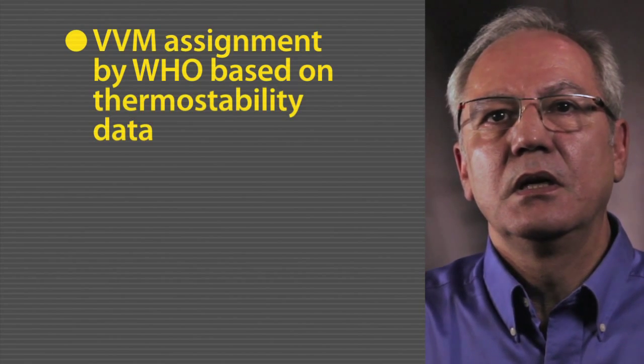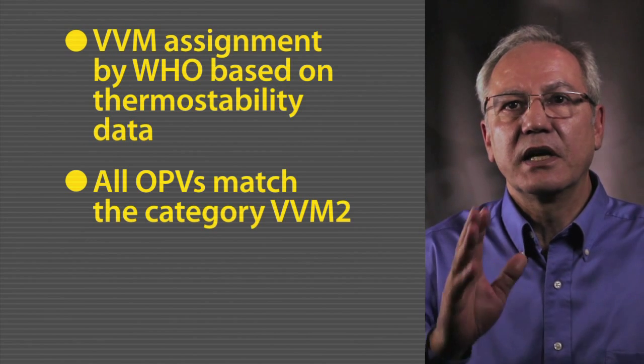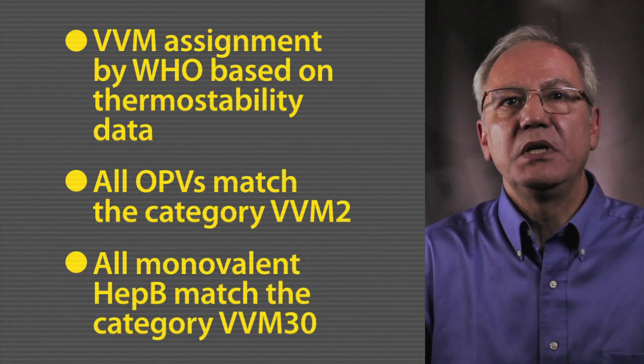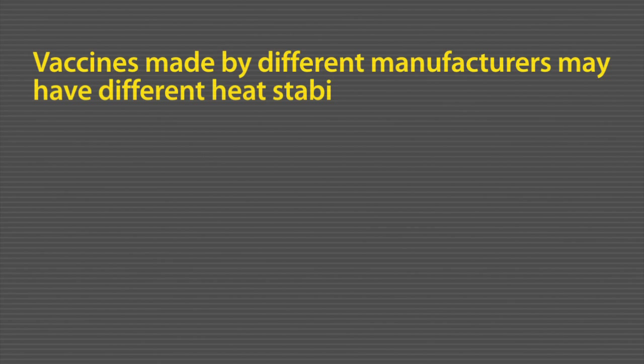The type of VVM for one vaccine is assigned by WHO on the basis of its thermostability. All OPVs match the category VVM2 and all monovalent hepatitis B, VVM30. However, vaccines made by different manufacturers may have different heat stability characteristics and may therefore be assigned to different categories by WHO.